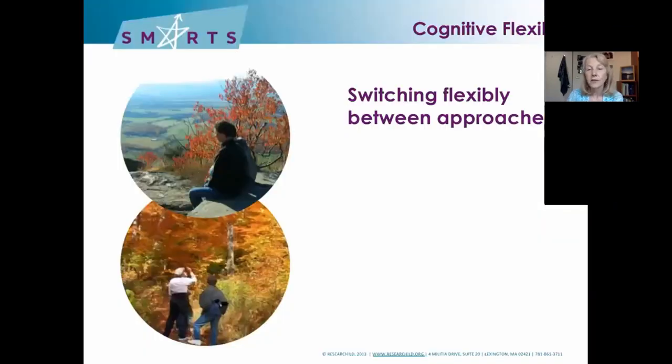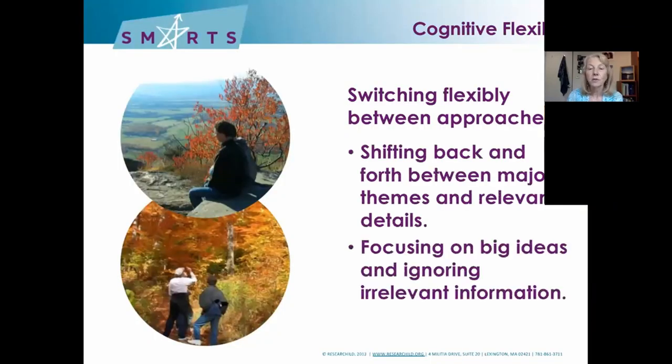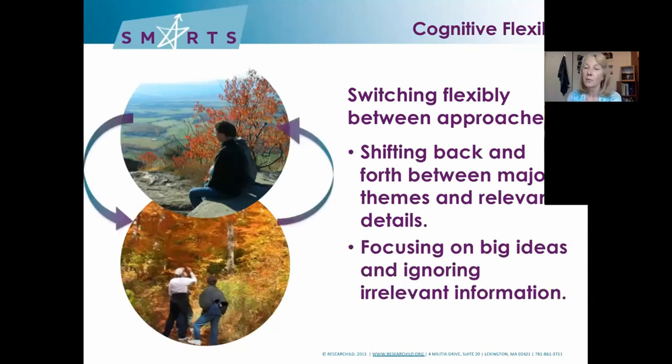If suddenly you come across a stream and you have to totally change the way you're hiking or biking, that comes into play as cognitive flexibility, as you try to reset your direction and reorganize and retool. So cognitive flexibility really is shifting flexibly between approaches — going from the top of the mountain to the bottom, and back to the top.